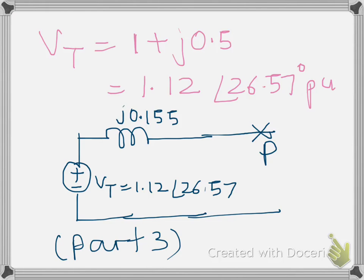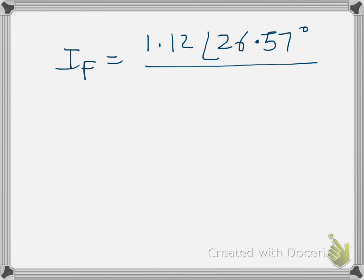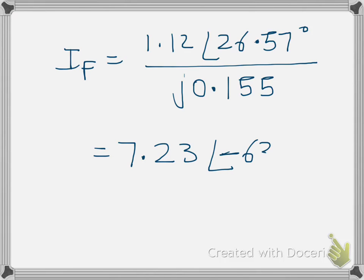Finally, we calculate the fault current IF. Applying Ohm's law to the Thevenin equivalent: IF = VT / ZT = (1.12 ∠26.57°) / (J·0.155) = 7.23 ∠−63.43° per unit. This is the fault current in per unit, since all values were in per unit.